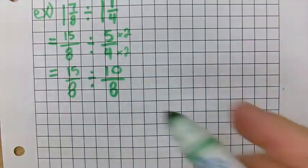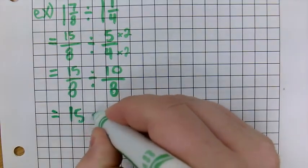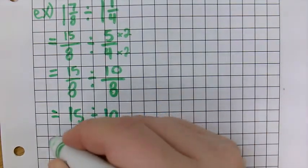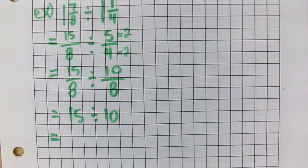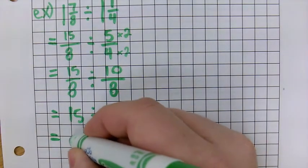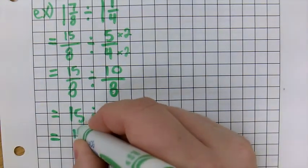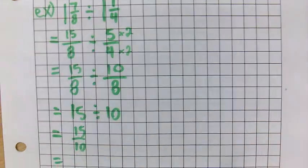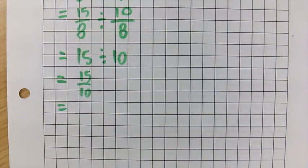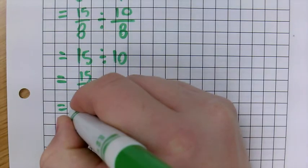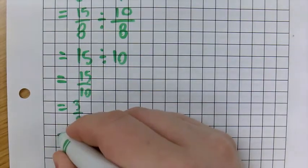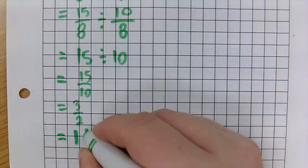So this becomes 15 divided by 10. 15 divided by 10 is 15 over 10, which is the same thing as 3 over 2, which happens to equal 1 and 1 half.